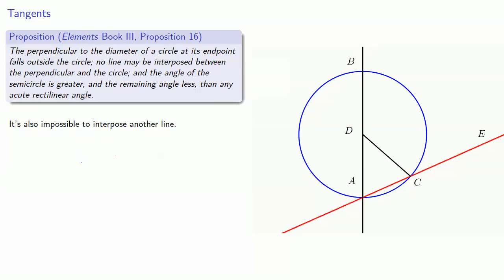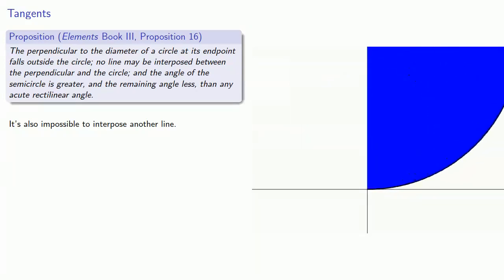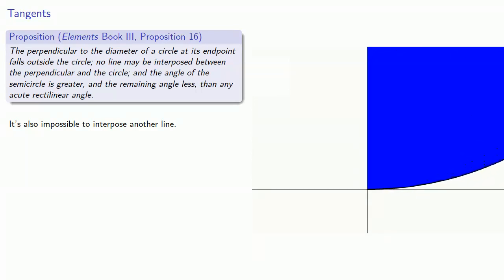So what about this angle of a semicircle? Well, let's consider a semicircle. And let's zoom in a little bit. We can talk about this region between the semicircle and the tangent line, and we could call that an angle. But it has some strange properties.